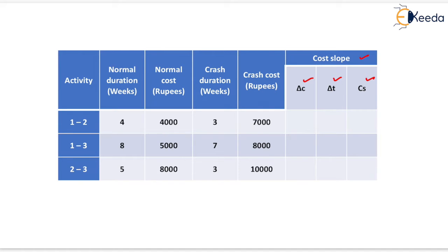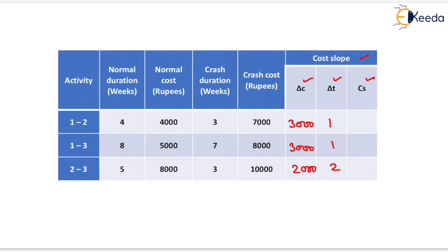Delta C equals crash cost minus normal cost. So 7000 minus 4000 equals 3000; 8000 minus 5000 equals 3000; and 10000 minus 8000 equals 2000. Delta T is determined by subtracting crash duration from normal duration: 4 minus 3 equals 1, 8 minus 7 equals 1, and 5 minus 3 equals 2. Cost slope is delta C divided by delta T, giving 3000, 3000, and 1000 respectively.